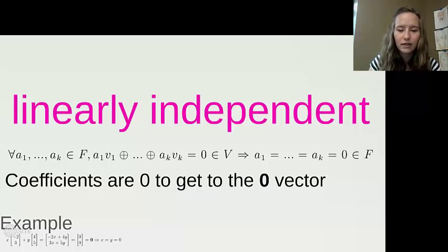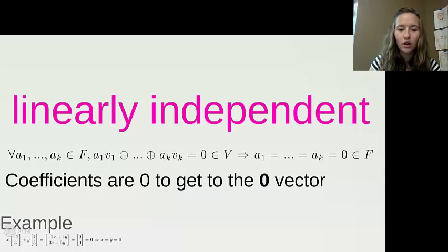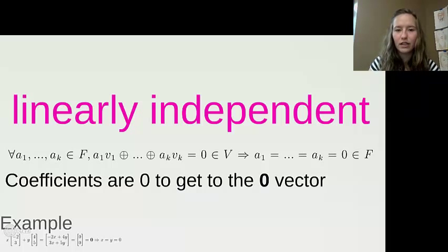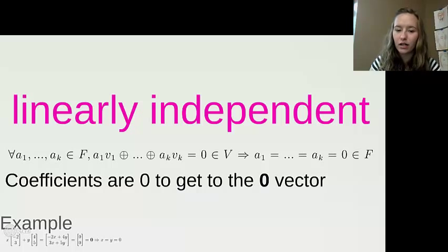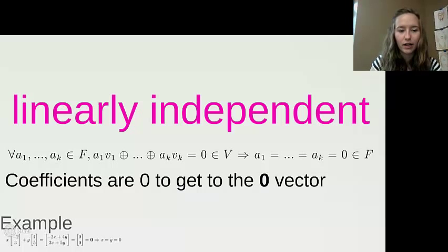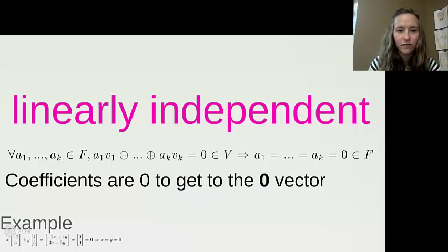Linearly independent means there is only one way to write a linear combination that gives the zero vector, and that way is if all the coefficients — the elements in our field — are zero. If we can use other elements in our field to reach the zero vector, then the set of vectors is linearly dependent, because there are other ways to write a linear combination to get to the zero vector.